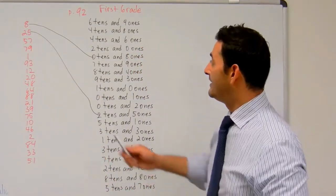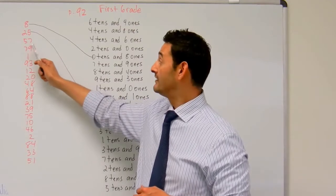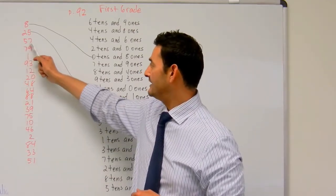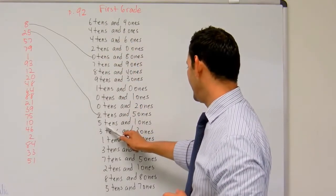Here I've got 57. How many bundles of ten do I have? I've got five. How many ones do I have? Seven. So I have five tens and seven ones. Let's see if I can find five tens. There it is, five tens.